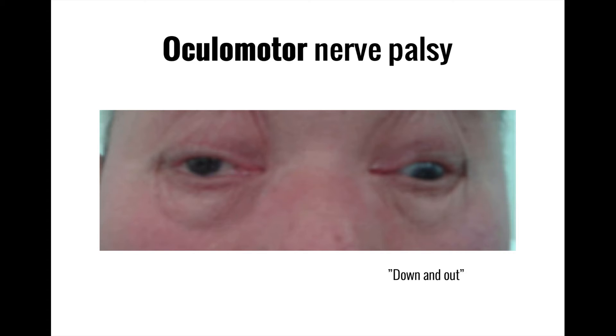Loss of oculomotor nerve function results in a down and out positioning of the eyes. This is because the two remaining extraocular muscles each exert an unopposed pull on the eyes, with the lateral rectus pulling out and the superior oblique pulling down.